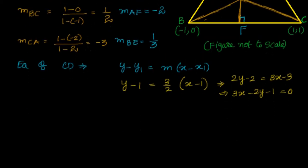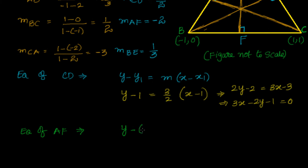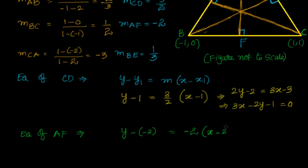Now let's find the equation of AF. The coordinates of A are (2, -2). So: y minus (-2) equals -2 times (x minus 2), which gives y plus 2 equals -2x plus 4. Simplifying, we get 2x plus y minus 2 equals 0. That is the equation of AF.